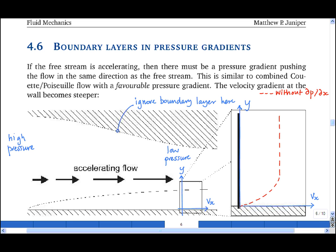And in that situation we saw the boundary layer velocity profile become steeper at the wall. And we find exactly the same thing happens in this situation. The boundary layer with the pressure gradient looks like this.